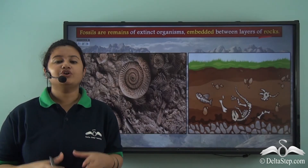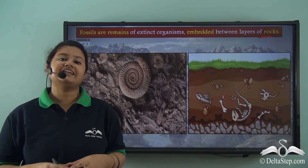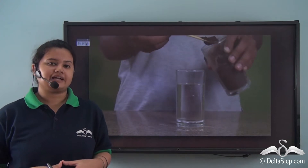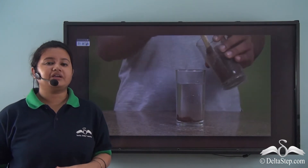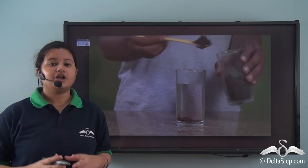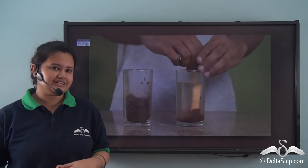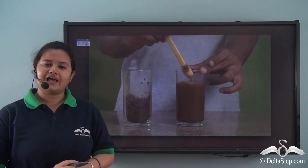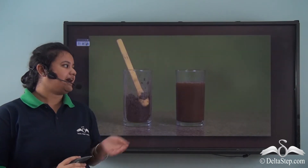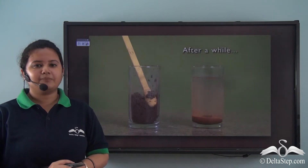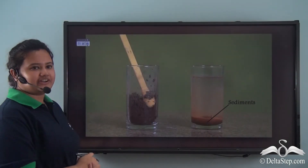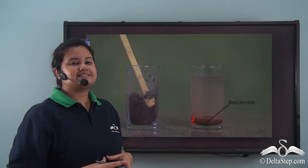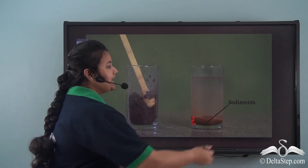Today in this video we will discuss about this type of rocks in detail. But before we discuss about the rocks, let us perform an activity. Take some mud particles and put them in clear water and stir the water vigorously. What will happen? The water will become muddy. Now put the muddy water undisturbed for some time. What will happen? The mud particles will settle at the bottom and clear water will float above. The particles that settle down at the bottom of the glass are called sediments.